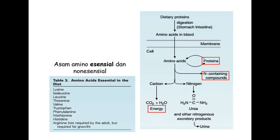Secara gizi, ada asam amino yang tidak bisa diproduksi oleh tubuh kita sendiri, disebut asam amino esensial yang harus ada di dalam makanan kita. Asam amino esensial yang harus ada dalam makanan adalah: lisin, isoleusin, leusin, treonin, valin, triptofan, fenilalanin, metionin, histidin, dan arginin. Inilah asam amino yang diperlukan dari luar karena tubuh tidak bisa membentuknya.